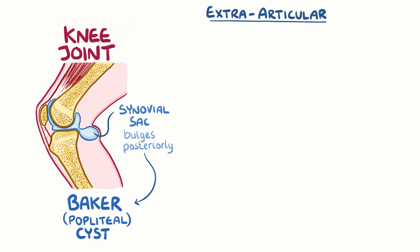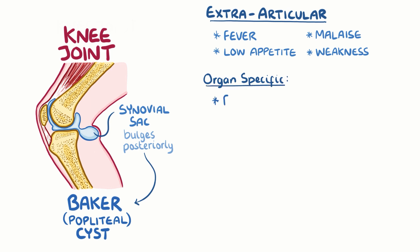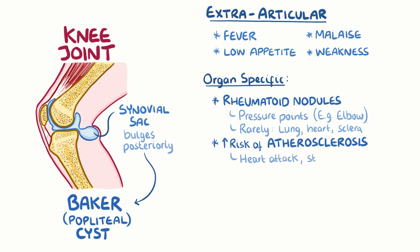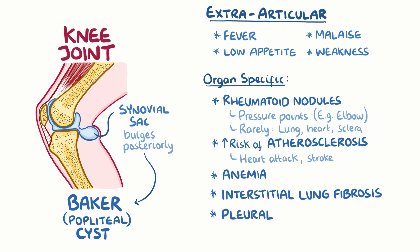Extra-articular manifestations include non-specific symptoms of inflammation, such as fever, low appetite, malaise or muscle weakness. Organ-specific manifestations include rheumatoid nodules, or firm bumps of tissue, most commonly found in the skin around pressure points such as the elbows. More rarely, they can be found in the lungs, the heart or the sclera of the eye. There's also an increased risk of atherosclerosis and therefore heart attack or stroke, as well as anemia, interstitial lung fibrosis, and pleural effusions, which can present as progressive shortness of breath.